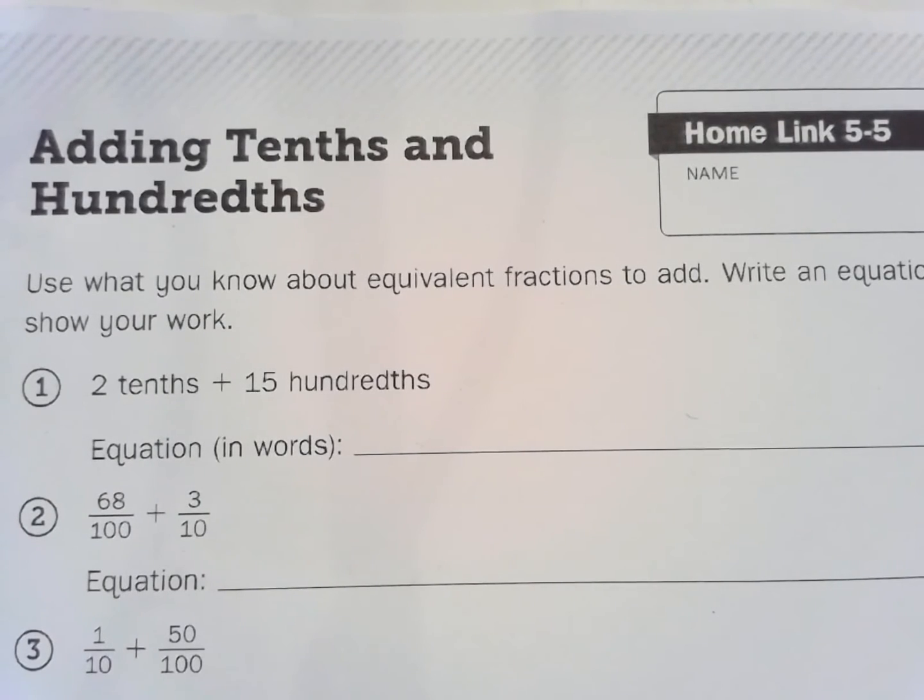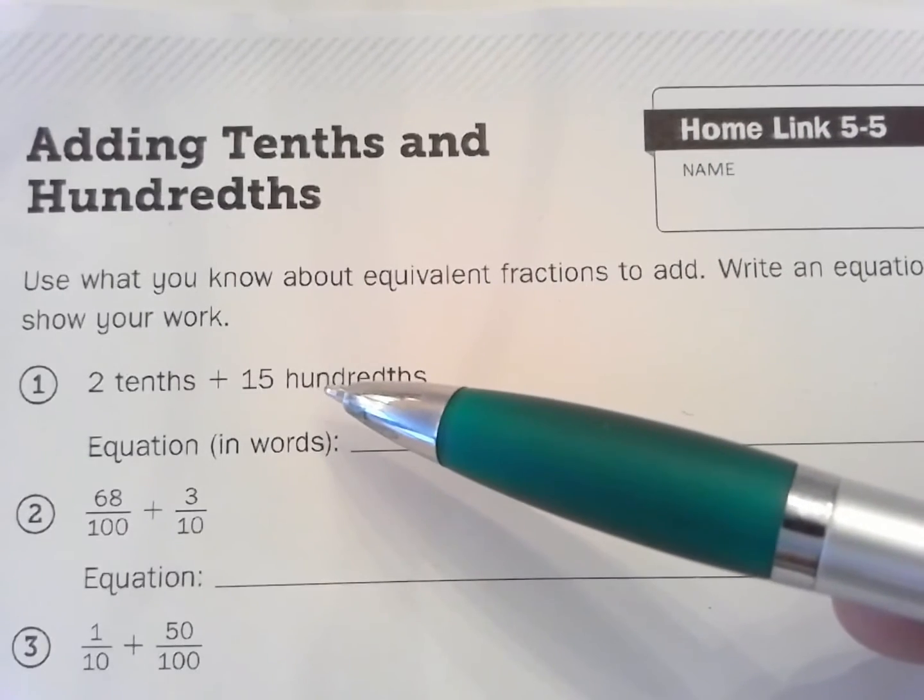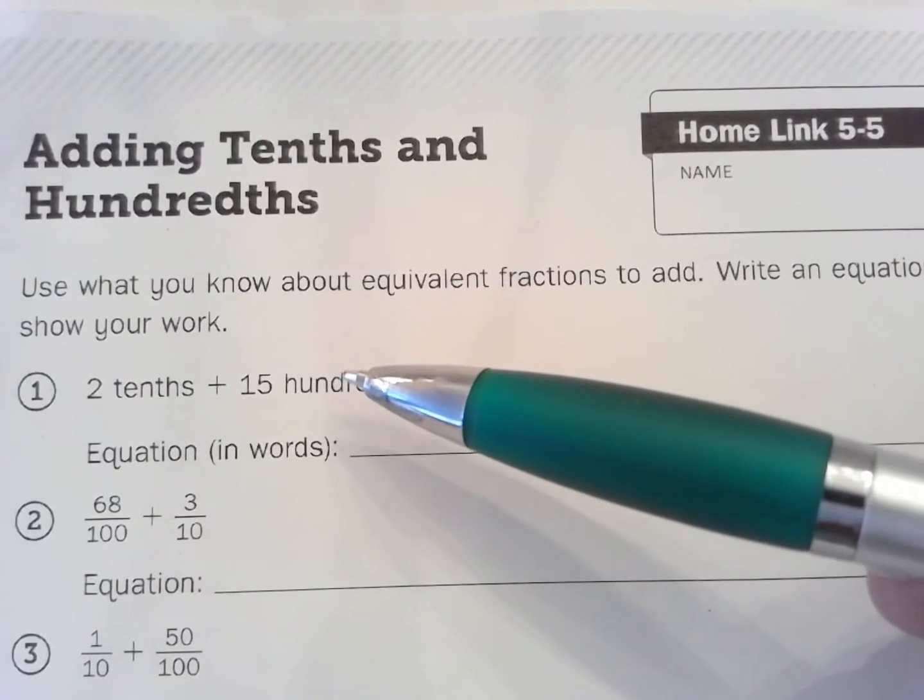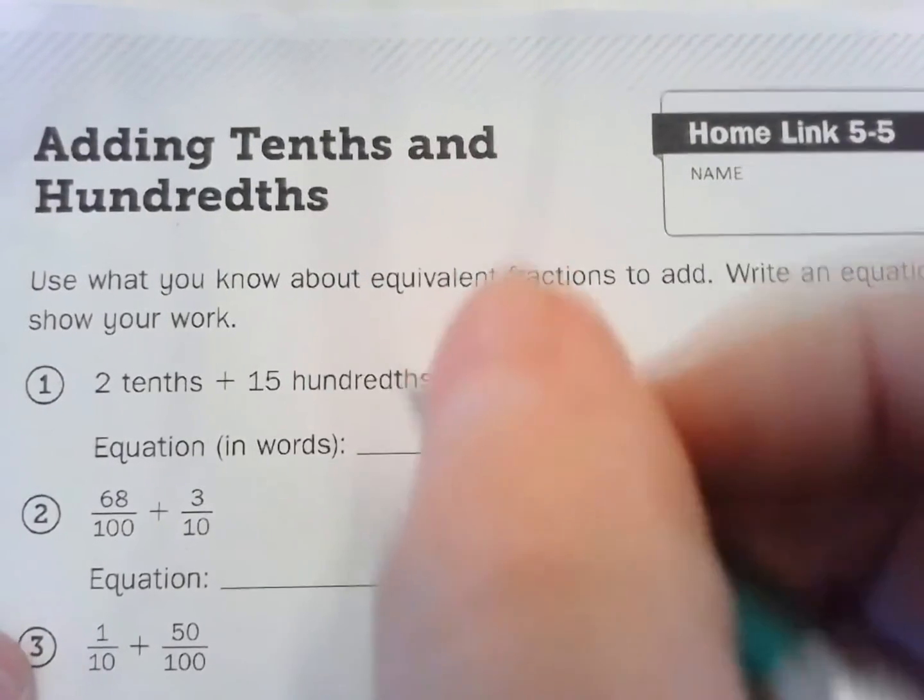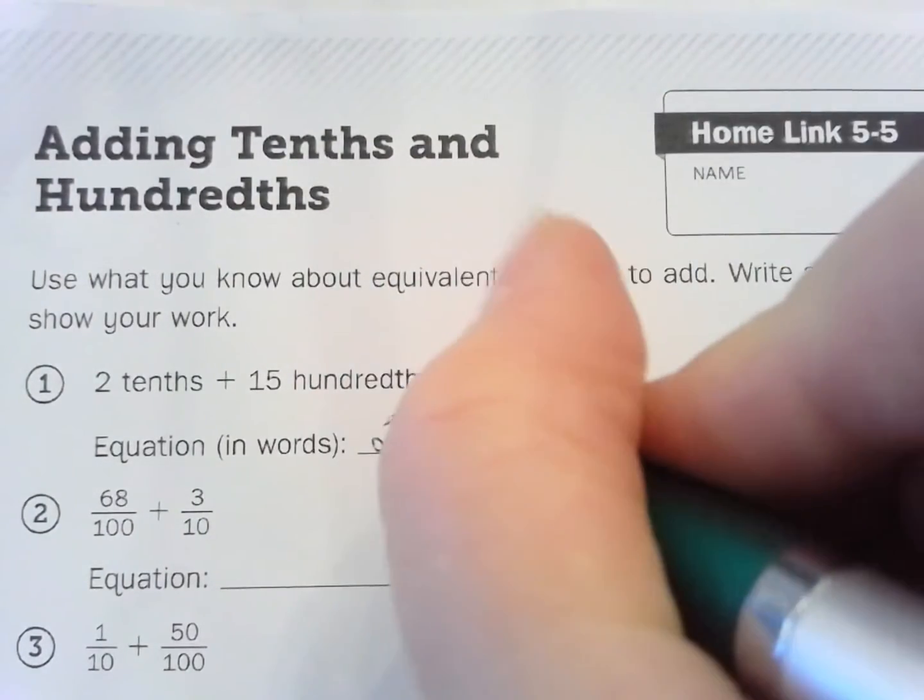So number one says two tenths plus fifteen hundredths. Write the equation in words. Okay, so two tenths and fifteen hundredths. Well it's fifteen hundredths, so we can't make that tenths because that would be one and a half tenths and can't have a fraction in a fraction. So two tenths we're gonna make that twenty hundredths.